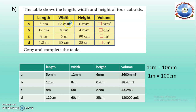The answer is to be found in cubic millimeters. Height is in millimeters, width is in millimeters, but length is in centimeters. So convert the centimeters into millimeters: 5 centimeters becomes 50 millimeters, since 1 centimeter equals 10 millimeters. Now length, width and height all have the same units. Multiplying these gives the answer: 3,600 cubic millimeters.